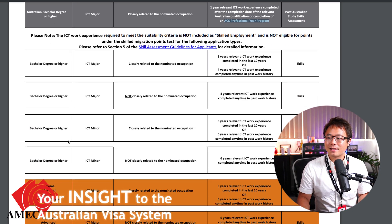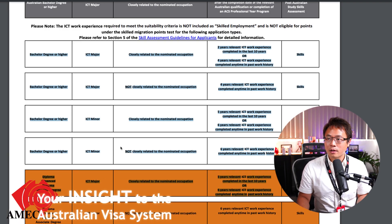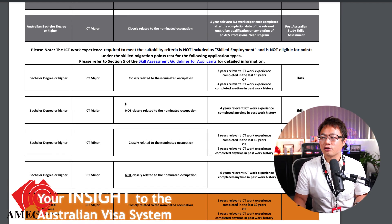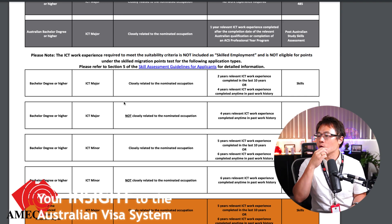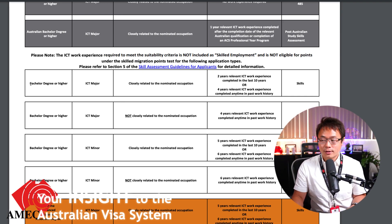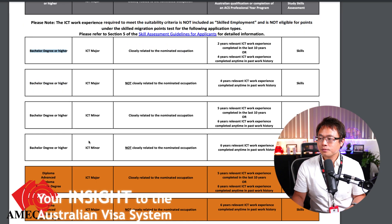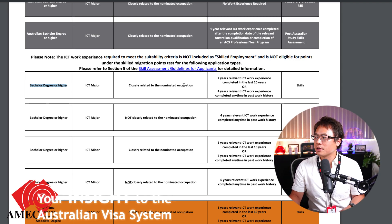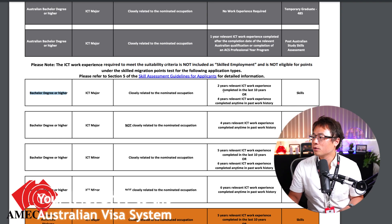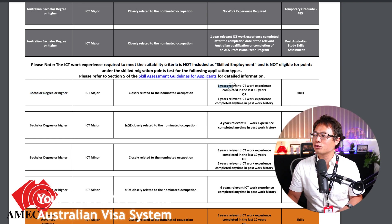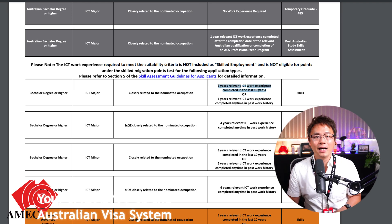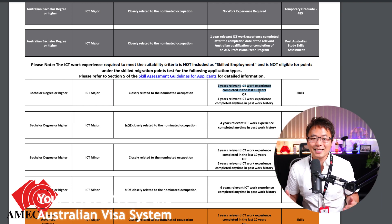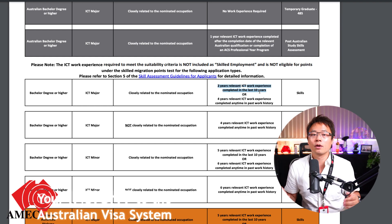The white and orange rows are for qualifications obtained overseas, not in Australia. So if you studied ICT in the USA at bachelor level or higher, you are at a disadvantage — you are required to have an additional one year, meaning two years of ICT work experience in total in order to pass the full skill assessment. ACS and the Australian government are clearly promoting people to study ICT in Australia if they want to migrate.